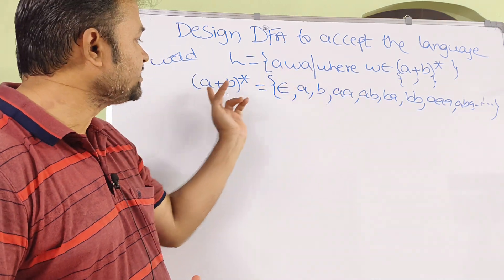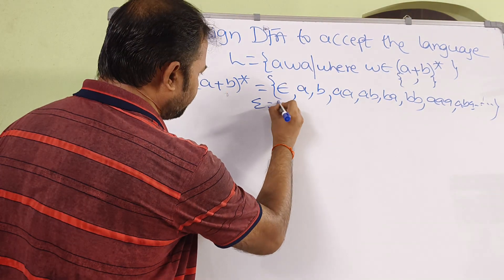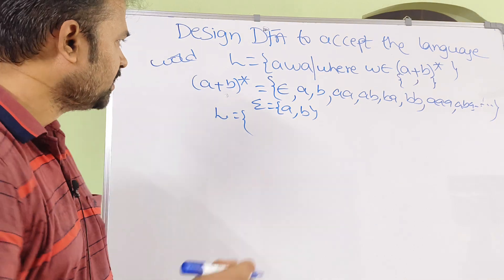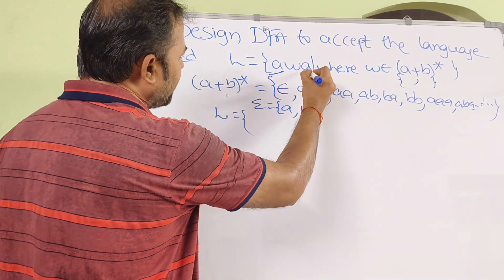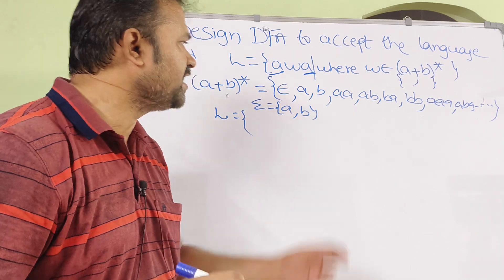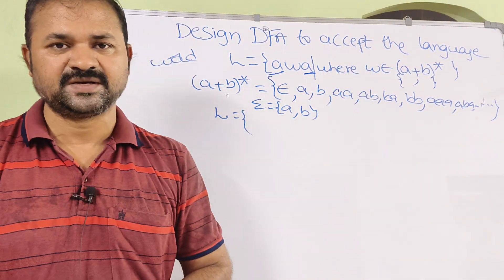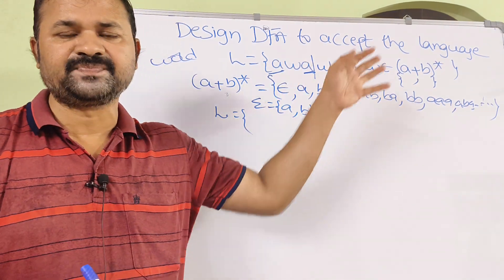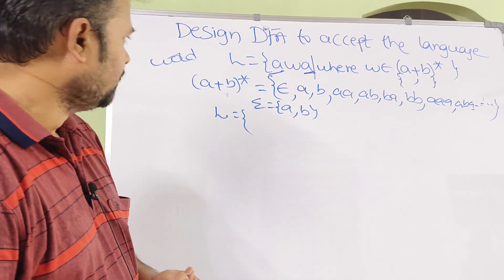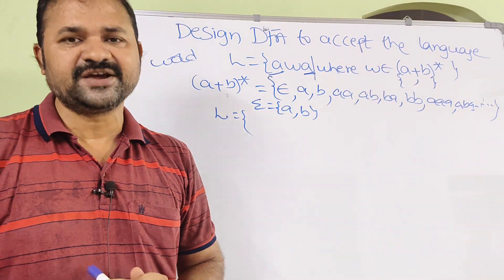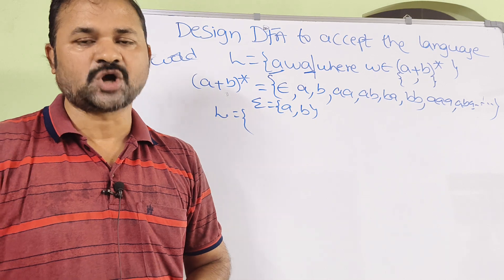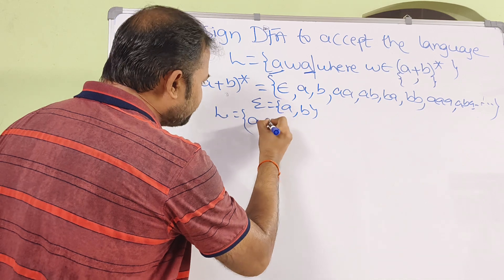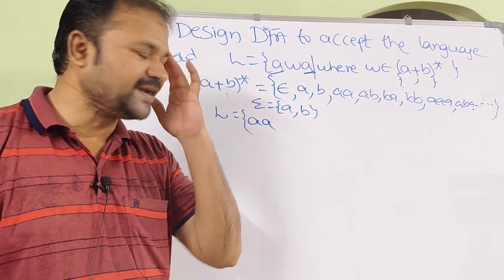Now let us see the language L = AWA. Here the string starts with A and ends with A, and in between A and A we can have any number of A's and B's. This is the language for strings starting with A and ending with A. So the problem may also be given as: design a DFA that accepts a set of strings starting and ending with A.